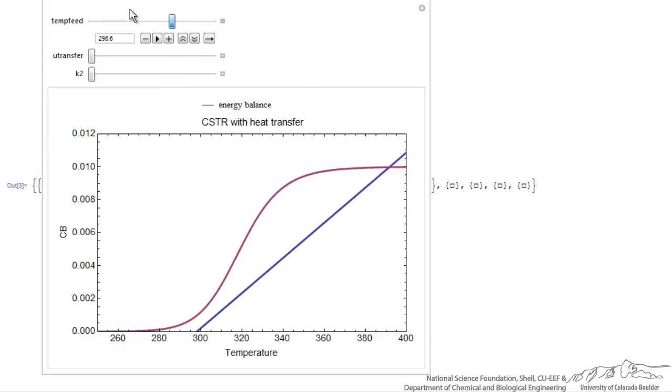Now I'll move back to lower feed temperature. I can change the heat transfer coefficient. Currently the heat transfer coefficient is zero. But if I increase it, notice I'm changing both the slope and the intercept of this energy balance line.